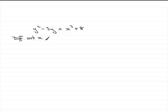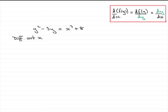I would always encourage you to write that statement if you're going to differentiate with respect to x. The first term is a y term — to differentiate y squared with respect to x, you use implicit differentiation: differentiate with respect to y to get 2y, then multiply by dy/dx. It's the chain rule essentially.